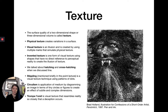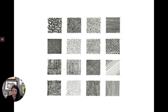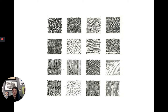Here are related terms for texture. When we talk about texture, we have two main kinds: physical texture and visual texture. Physical texture creates variations in the actual surface — when you run your hand over marble it's very smooth, sandpaper is very rough. Visual texture is an illusion we create by using multiple marks.